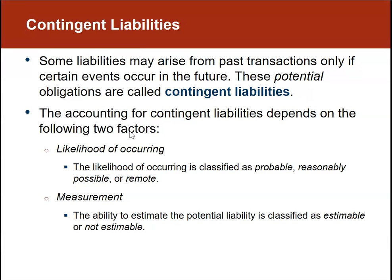So that was installment notes. We also need to understand that in business, in addition to liabilities we know are going to occur, we also have what are called contingent liabilities. Some liabilities may arise from past transactions only if certain events occur in the future. These potential obligations are called contingent liabilities, and how we account for them depends on two factors: the likelihood of occurrence and how we measure the amount of the liability.